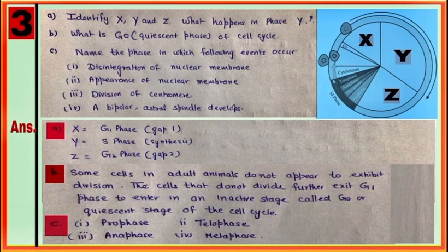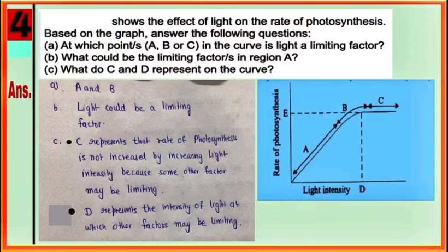In question number four, the graph is showing the effect of light intensity on rate of photosynthesis. Based on it, do parts A, B, and C of the question.